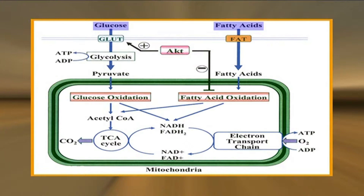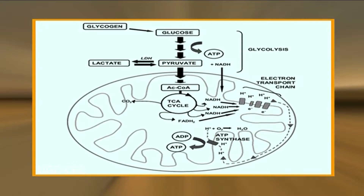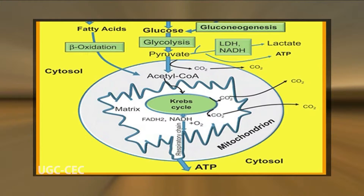The oxidative breakdown of glucose and fatty acids is the principal source of metabolic energy in animal cells. The initial stage of glucose metabolism, called glycolysis, occurs in the cytosol, where glucose is converted to pyruvate. Pyruvate is then transported into the mitochondria, where it completes its oxidation to carbon dioxide, yielding the bulk of usable energy in the form of ATP. This involves the initial oxidation of pyruvate to acetyl-coenzyme A, which is then broken down to carbon dioxide via the citric acid cycle.